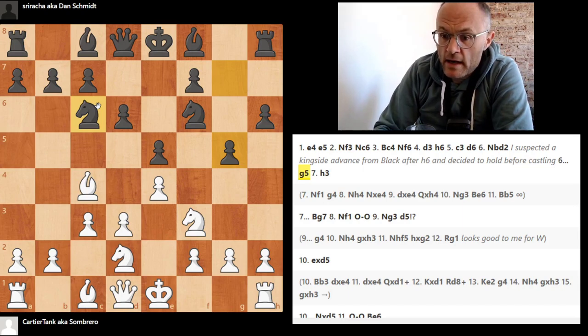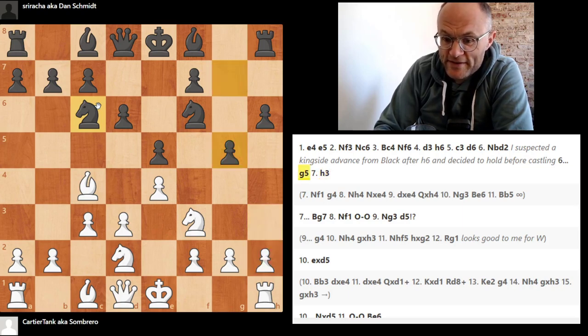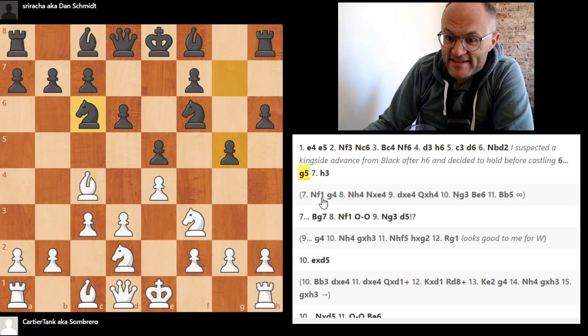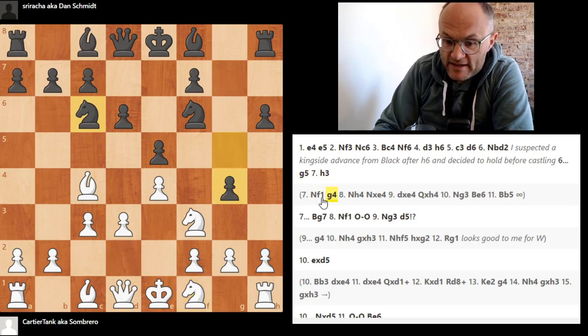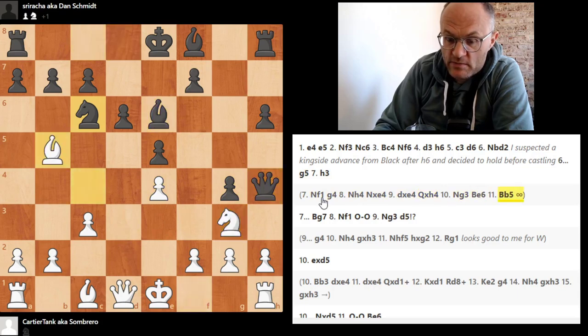Okay, now h3, and my first instinct was to yell at Sombrero for this move, and I liked his other plan here. Knight g3, bishop e6, bishop b5.